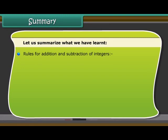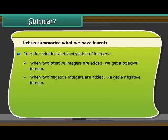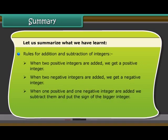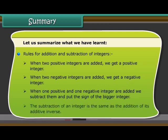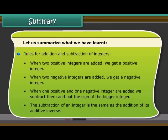Rules for addition and subtraction of integers. When two positive integers are added, we get a positive integer. When two negative integers are added, we get a negative integer. When one positive and one negative integer are added, we subtract them and put the sign of the bigger integer. The subtraction of an integer is the same as the addition of its additive inverse.